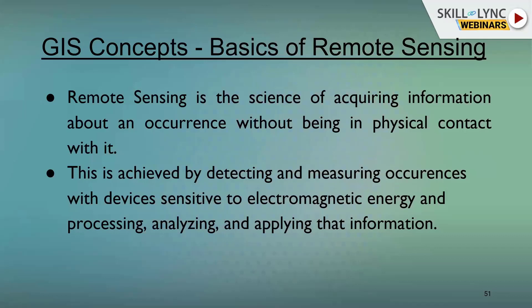Acquiring data remotely from a distant location — take the example of a satellite, which is hundreds to thousands of kilometers above in the sky. They are actually sensing data for different purposes — that is known as remote sensing. The components involved are: energy source or illumination (the sun), radiation and the atmosphere (electromagnetic spectrum), interaction with the target, re-emitting of energy to the satellite, collection at the ground station, and then interpretation, application, and analysis.